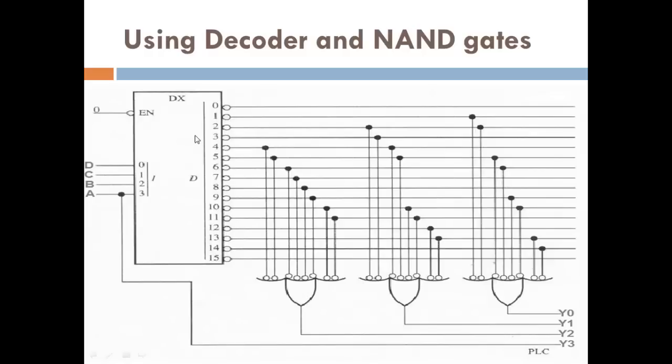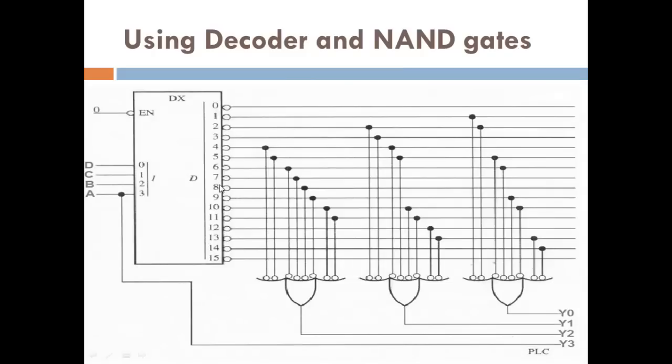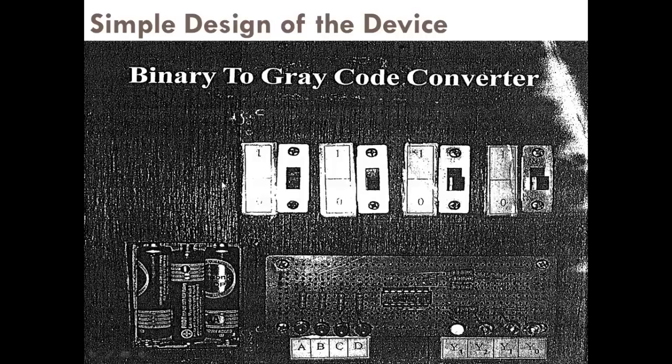Here we have the decoder 4 to 16. We have three NAND gates connected properly according to these functions that are extracted from the truth table. Here is a photo of a simple design of the device.